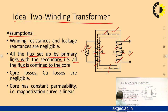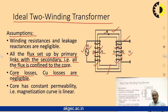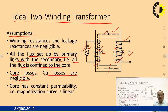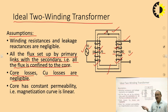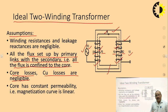Core losses are negligible and copper losses are also negligible. Copper losses are due to winding resistance — when current passes through the winding, I²R losses occur. Since winding resistance is negligible, copper losses are negligible. Core losses include hysteresis loss and eddy current loss; these are also negligible. To minimize eddy current loss we laminate the core, and to minimize hysteresis loss we select an appropriate core material.